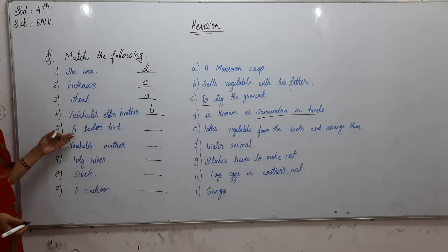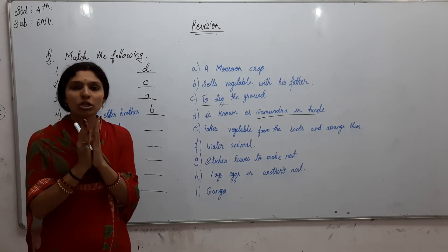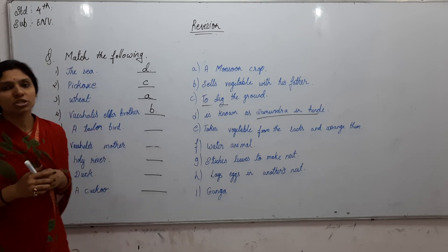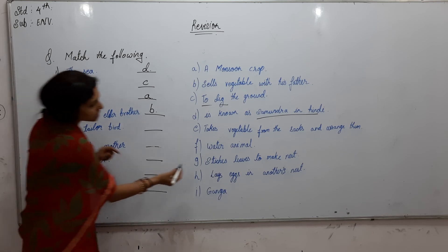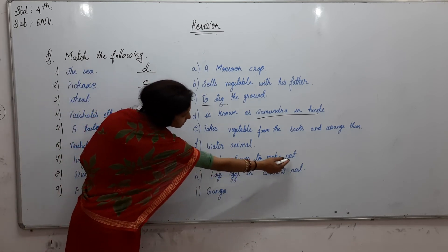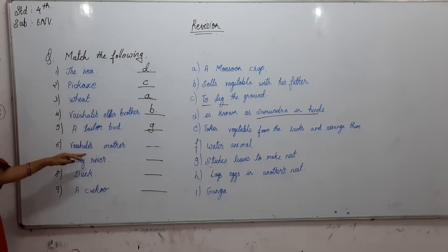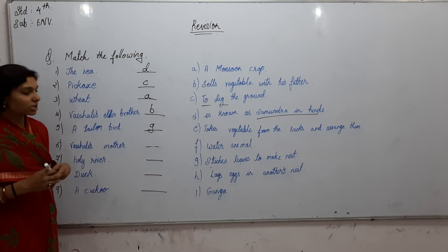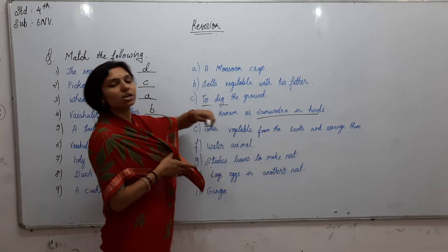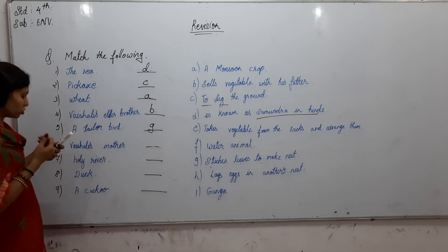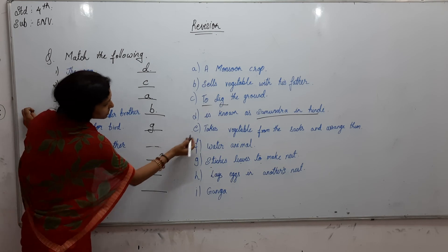Next, the Tailor Bird — we studied that the tailor bird stitches two leaves together with its beak and lays its eggs in between those leaves to make a nest, so 'stitches leaves to make nest' — Option G. Vesali's mother — she would take vegetables from the sacks and arrange them, so the answer is Option E.